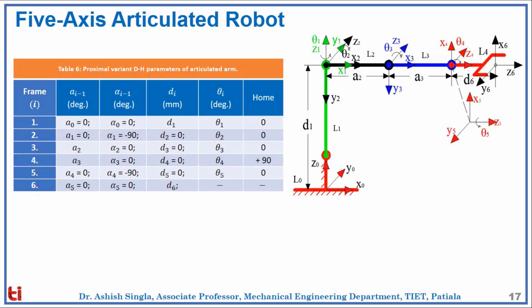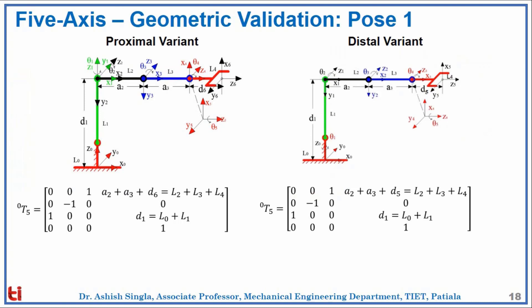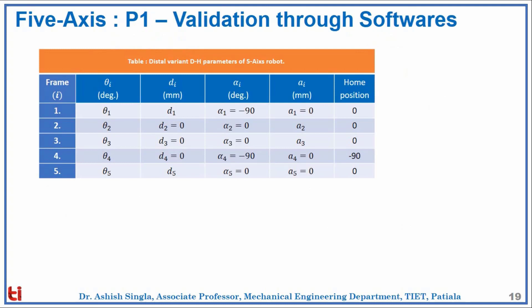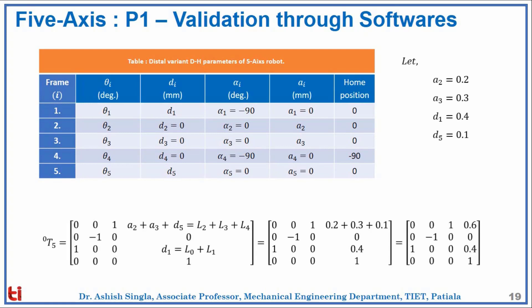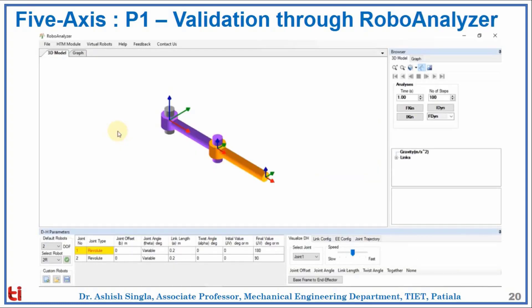Now we have the 5-axis articulated robot. We can see the robot and its proximal variant DH parameter table. The 5-axis geometric validation of pose 1 in both variants gives the same transformation matrix. For software validation, we use the distal variant DH parameter table, assume some values, put them into the transformation matrix, and obtain the resultant matrix.